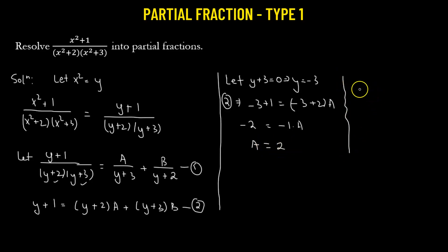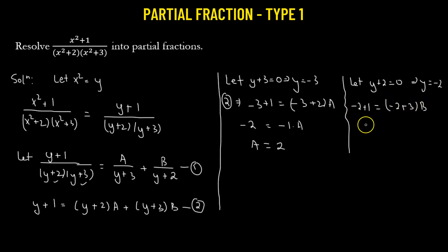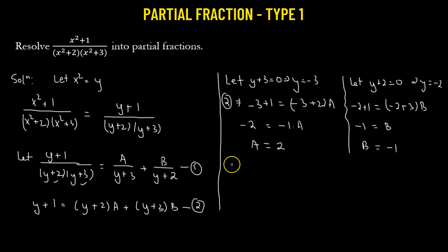To find the value of B, we take y + 2 = 0, or y = -2. Then we have -2 + 1 on the left-hand side, and on the right-hand side the first term is 0. The second term is (-2 + 3) × B, so -1 = 1 × B, giving B = -1.